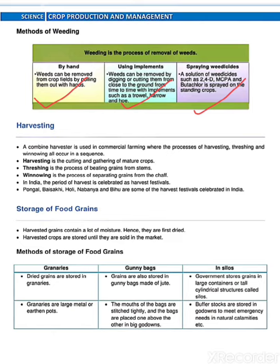So that we can protect crops from weeds. The next process is harvesting — harvesting is the cutting and gathering of mature crops. Then after the next process is threshing — it is the process of beating grains from the stem. And last one is winnowing — it is the process of separating grain from the chaff.